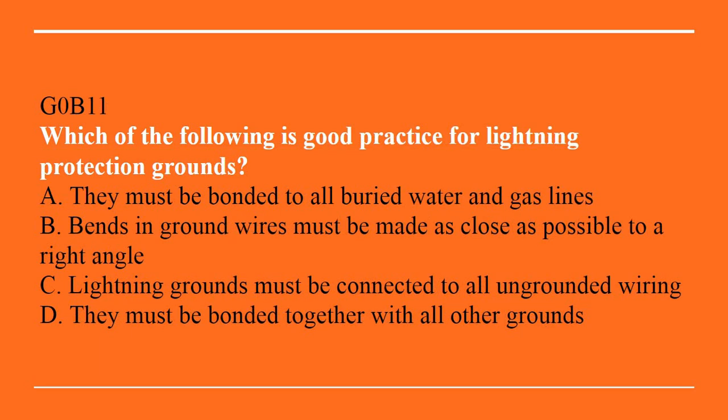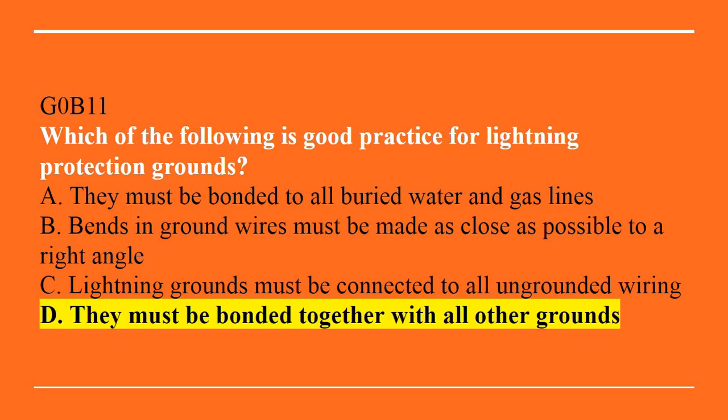G0B11: Which of the following is a good practice for lightning protection grounds? A, they must be bonded to all buried water and gas lines. B, bends in ground wires must be made as close as possible to a right angle. C, lightning grounds must be connected to all ungrounded wiring. Or D, they must be bonded together with all other grounds. Correct answer is D — they must be bonded together with all other grounds.